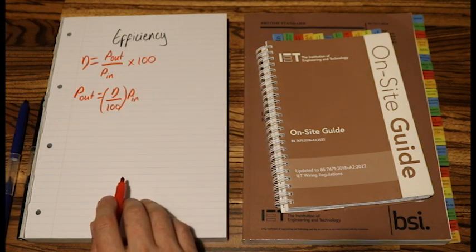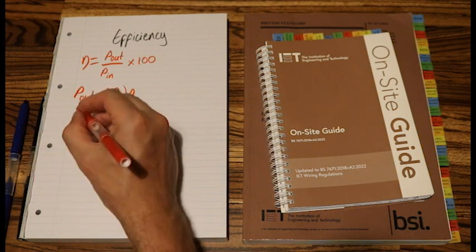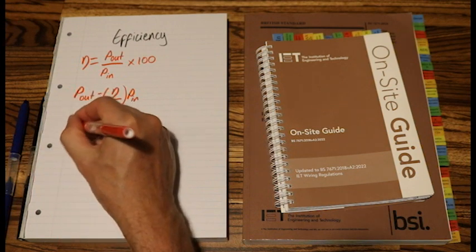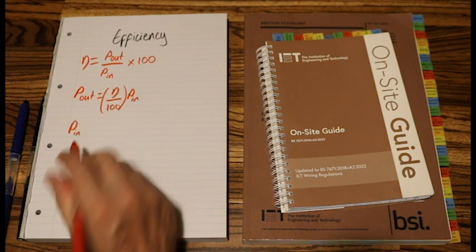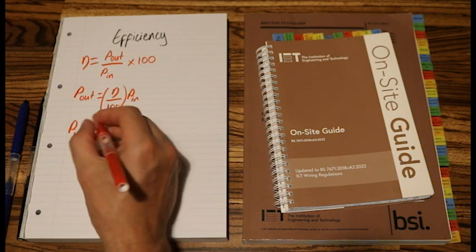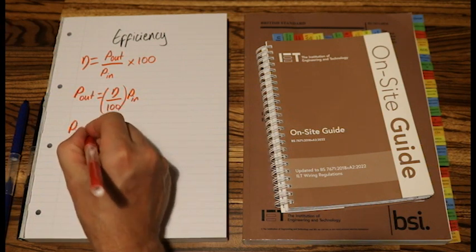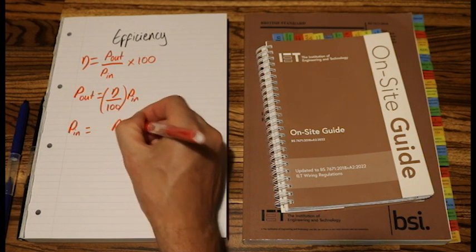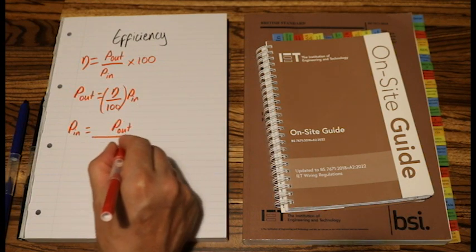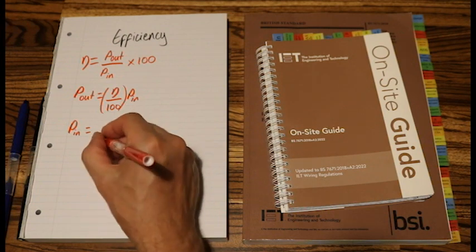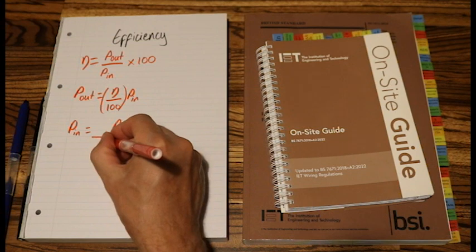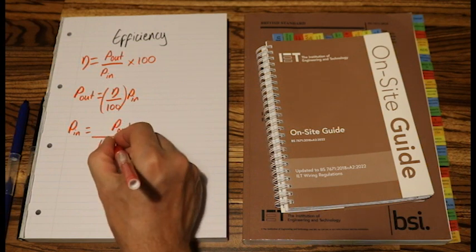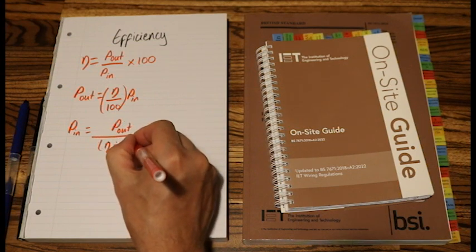And the last one will be power in, P in, equals power out, P out, over efficiency divided by 100.